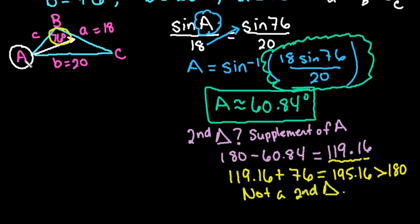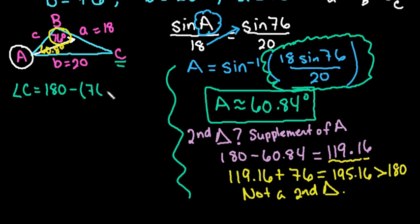So we can only form one triangle with this one, and that's when angle A is 60.84 degrees. So this angle right here is 60.84. So now what we want to do is find the two Cs. We want to start by finding angle C. So angle C, remember the sum of the triangles all add up to be 180 degrees, can be found by doing 180 minus the sum of 76 and 60.84.